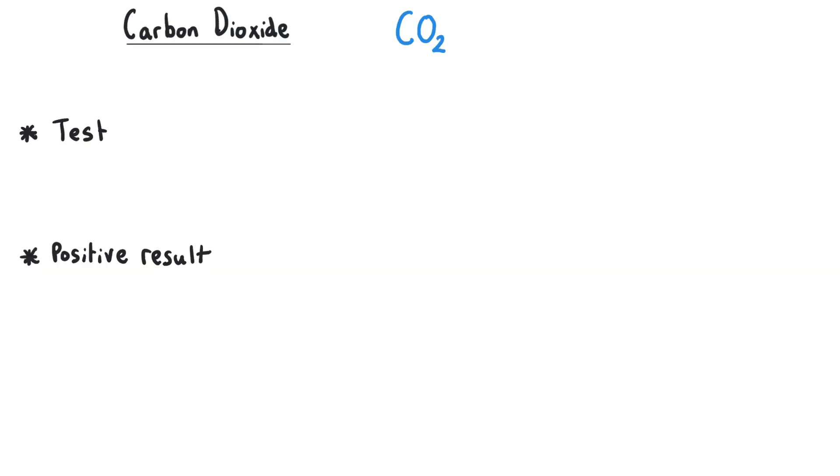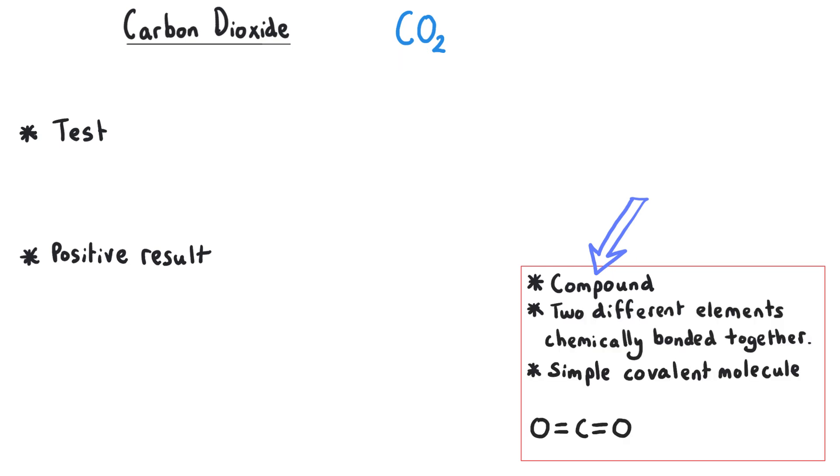Carbon dioxide has got the chemical formula CO2. Now both of those symbols are capital letters, which means we've got two different elements in this gas: we've got carbon and we've got oxygen. We've got two oxygen, you can tell that from the formula, and that's why it's carbon dioxide. That di means two oxygen atoms. It's also a gas, it's got the little g state symbol.